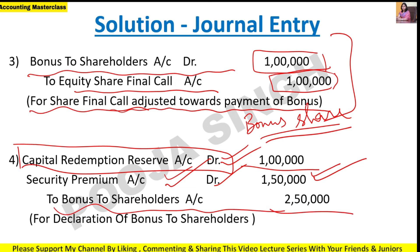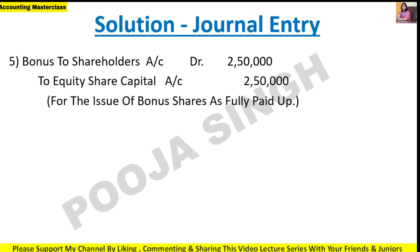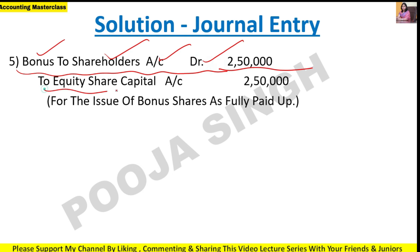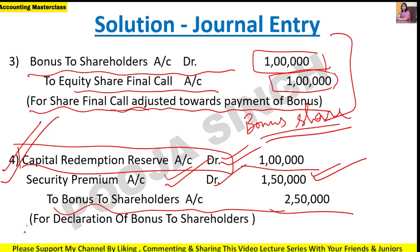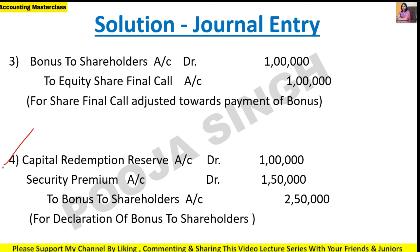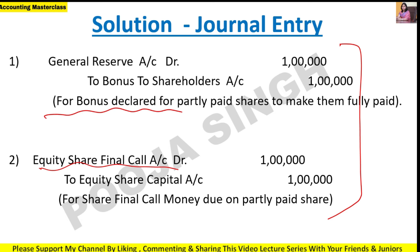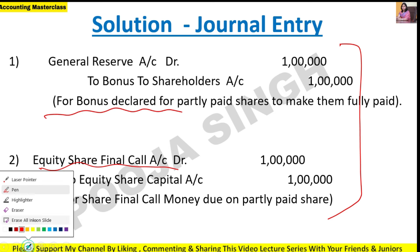Entry 5 - When bonus shares are finally issued: Bonus to Shareholder account debit 2.5 lakh, to Equity Share Capital account 2.5 lakh. The Bonus to Shareholder account was credited in Entry 4, so now it is debited and cancelled out. These are the simple 5 journal entries for this question - 3 for partially paid up to fully paid up conversion and 2 for bonus share issue.